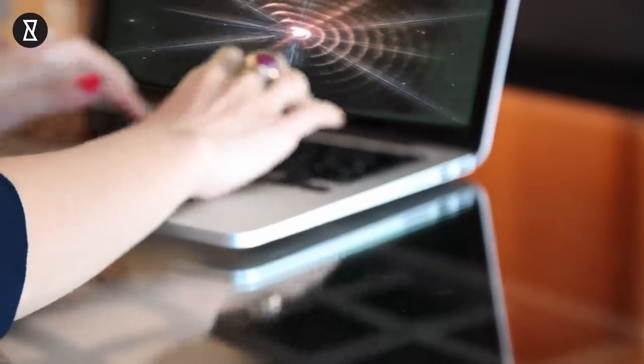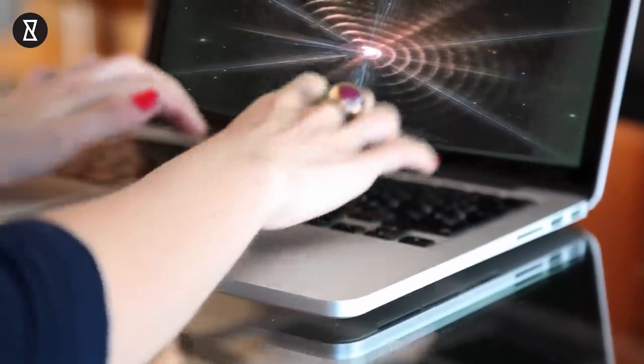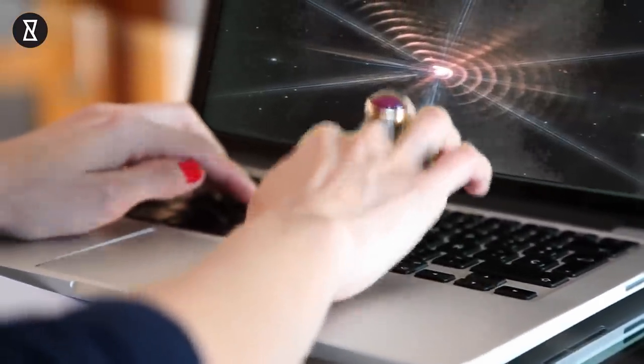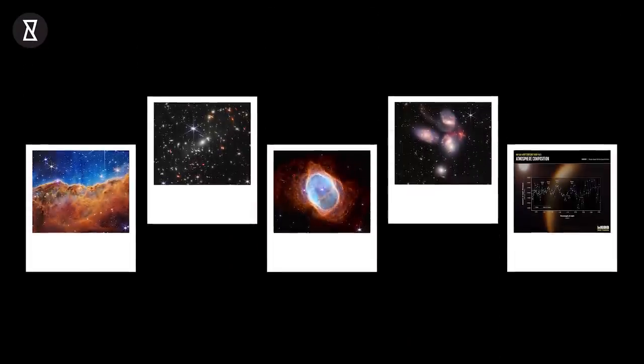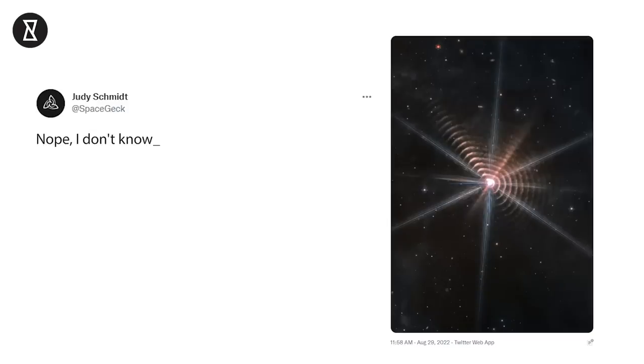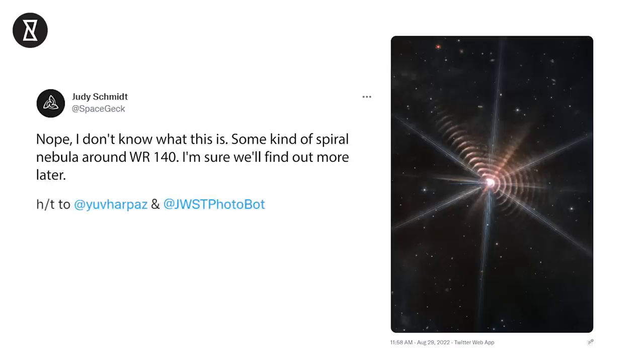The picture was shared by citizen scientist Judy Schmidt, who works on the processing of images clicked by observatories and has contributed to the development of several Webb images. No, I don't know what this is. Some kind of spiral nebula around WR140. I'm sure we'll find out more later, she tweeted.